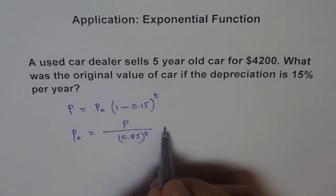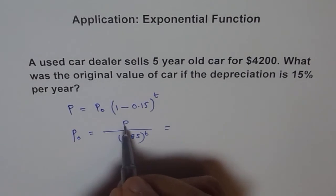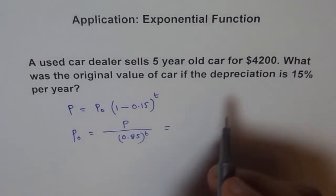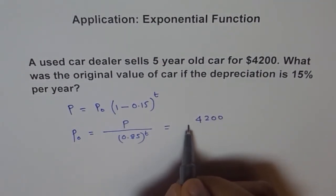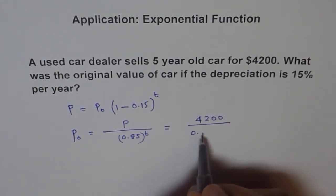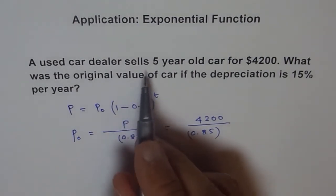We can find the initial amount by substituting P as 4200 divided by 0.85 to the power of 5.